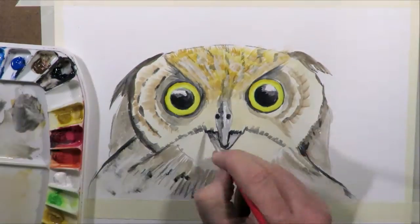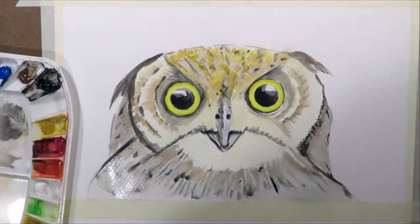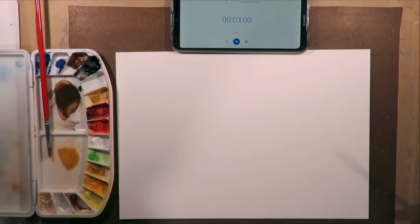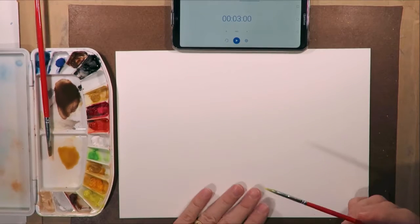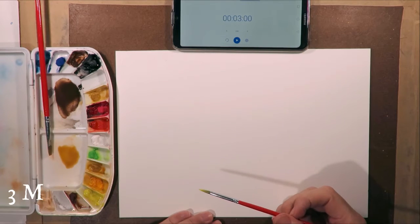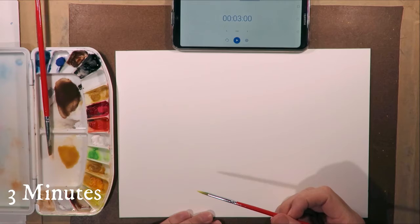So that basically is a 30 minute owl painting with 15 minutes of that time being prep. Now for the fun three minute one. Okay so I've got my paints mixed, a couple of brushes ready, going for the three-minute owl painting.